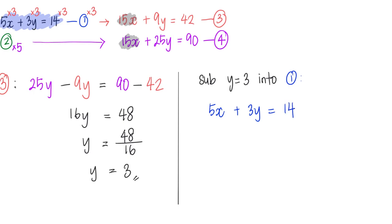5x plus 3y equals to 14. And because I already know what is my y, that means I'm no longer going to write y, I'm going to write y as 3. So 5x plus 3 times 3, which is 9, equals to 14.